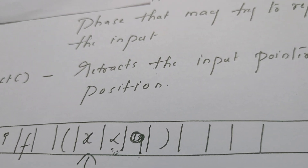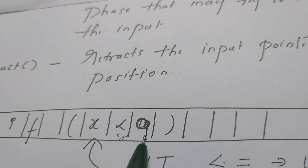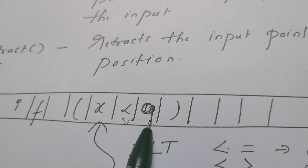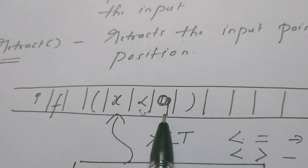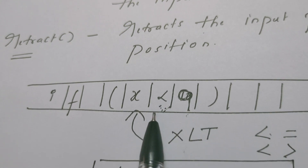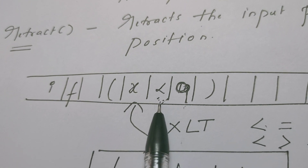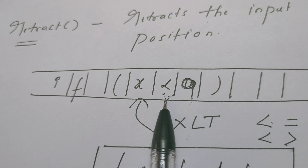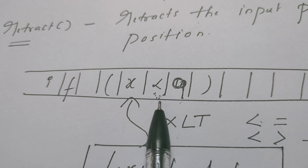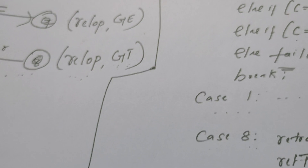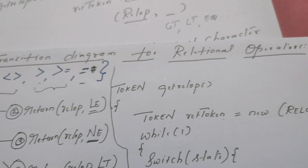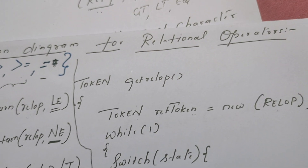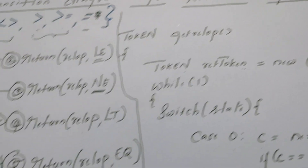In the transition diagram, just reading less than will not return the attribute value LT. After the less than symbol, it should be followed by a symbol other than equal to or greater than. Only then does the lexical analyzer conclude it is a relational operator with attribute value less than, and retract is used. After reading less than and then the number 9, the input pointer retracts one position, and it decides that the lexeme is less than. This transition diagram for relational operators — and similarly for identifiers — is very important. I hope you understood. Please subscribe to my channel and continue to watch. Thank you.